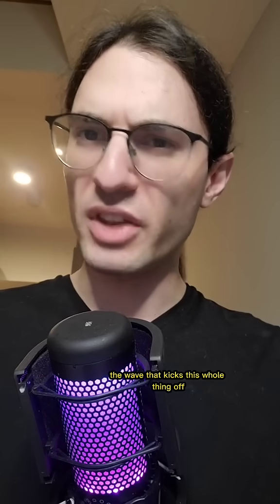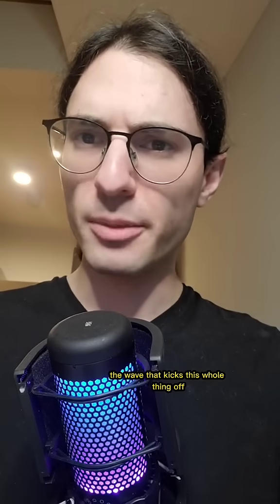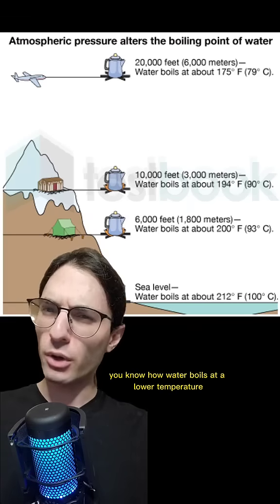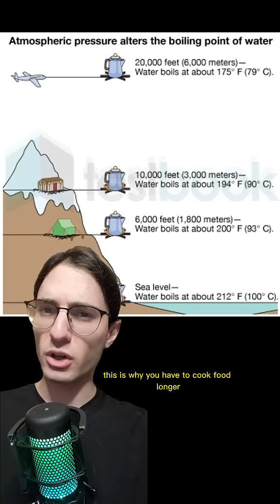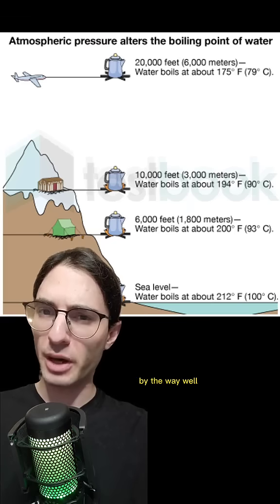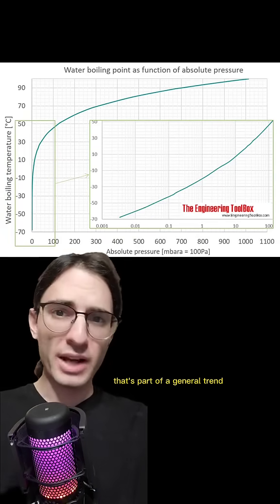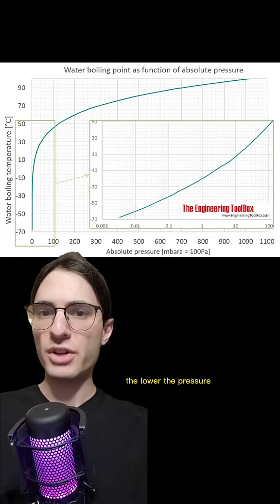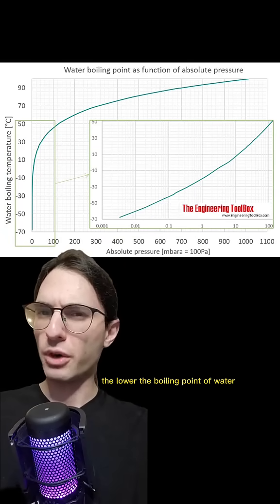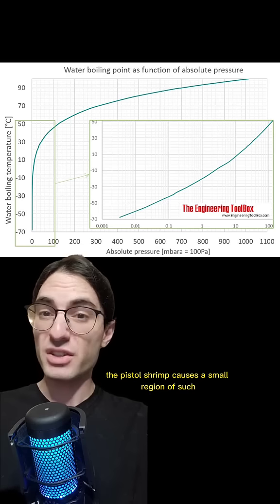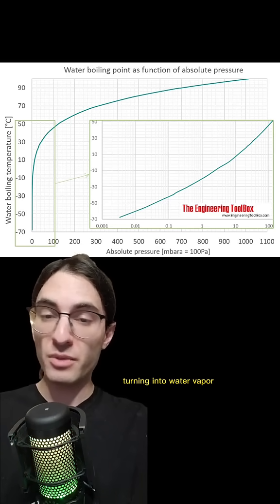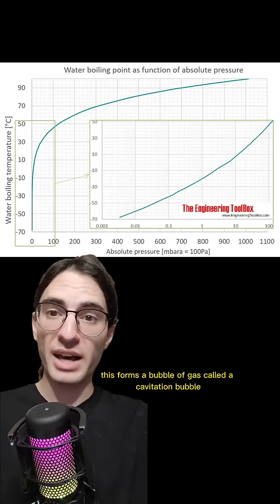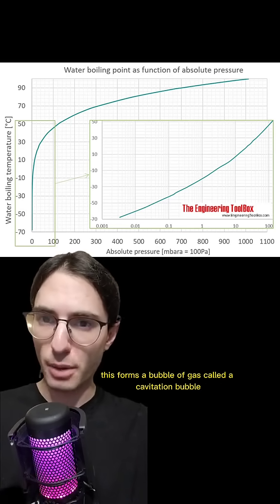It's the low pressure part of the wave that kicks this whole thing off. You know how water boils at a lower temperature at higher altitudes? This is why you have to cook food longer at higher altitudes, by the way. That's part of a general trend — the lower the pressure, the lower the boiling point of water. The pistol shrimp causes a small region of such low pressure that the water boils instantly, turning into water vapor. This forms a bubble of gas called a cavitation bubble.